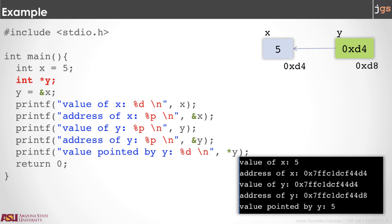You can print the value of the variable x with the name of the variable, but also you can access the variable x and the value that is inside using the pointer. In order to do so, you use the asterisk. If you notice, both lines are printing 5 — in the first case because you access directly x as usual, but here because you are having access to the value in the address 0xd4. The asterisk here represents this arrow. So asterisk y is like: go to the address stored in y, 0xd4, and get the value there.